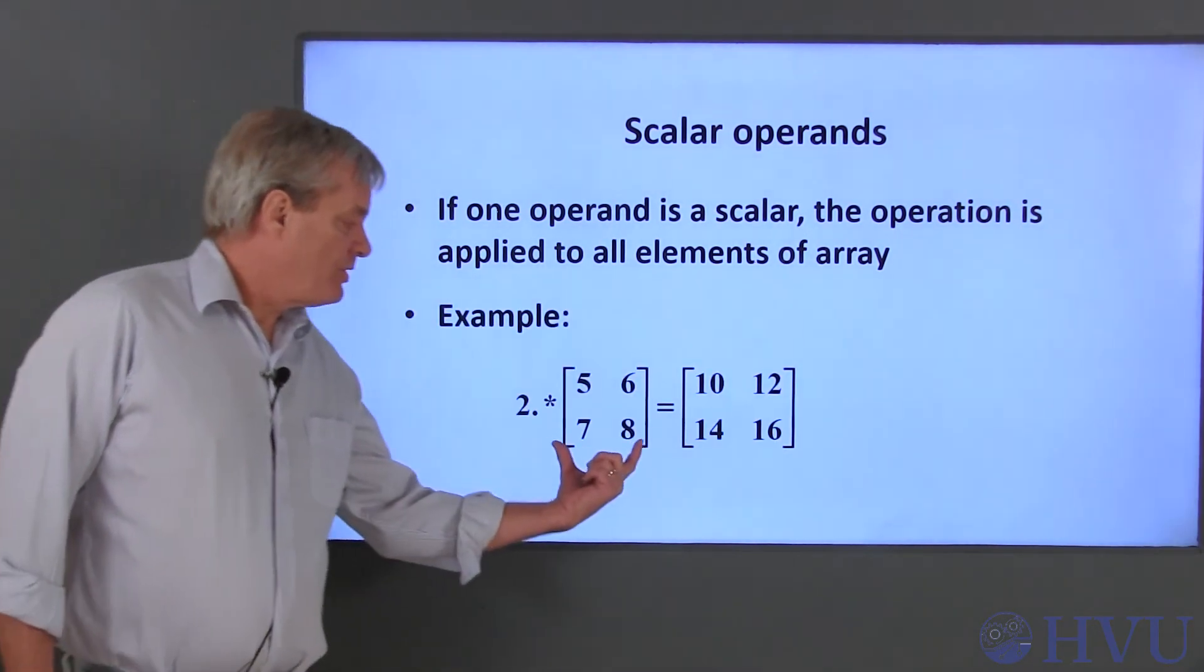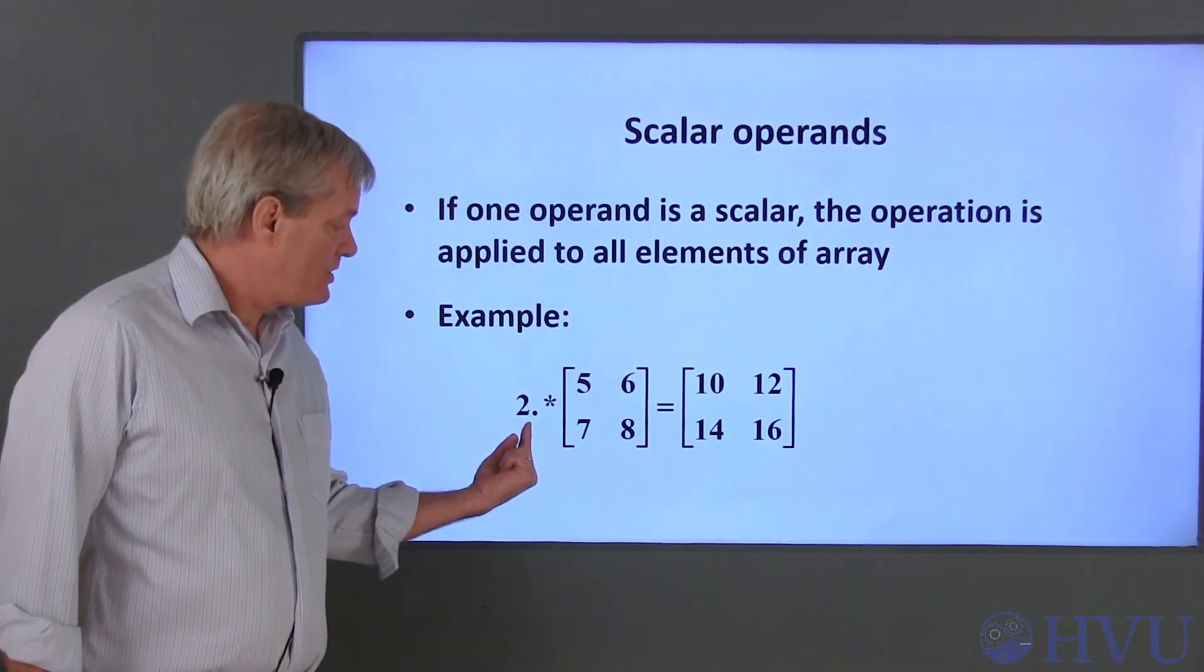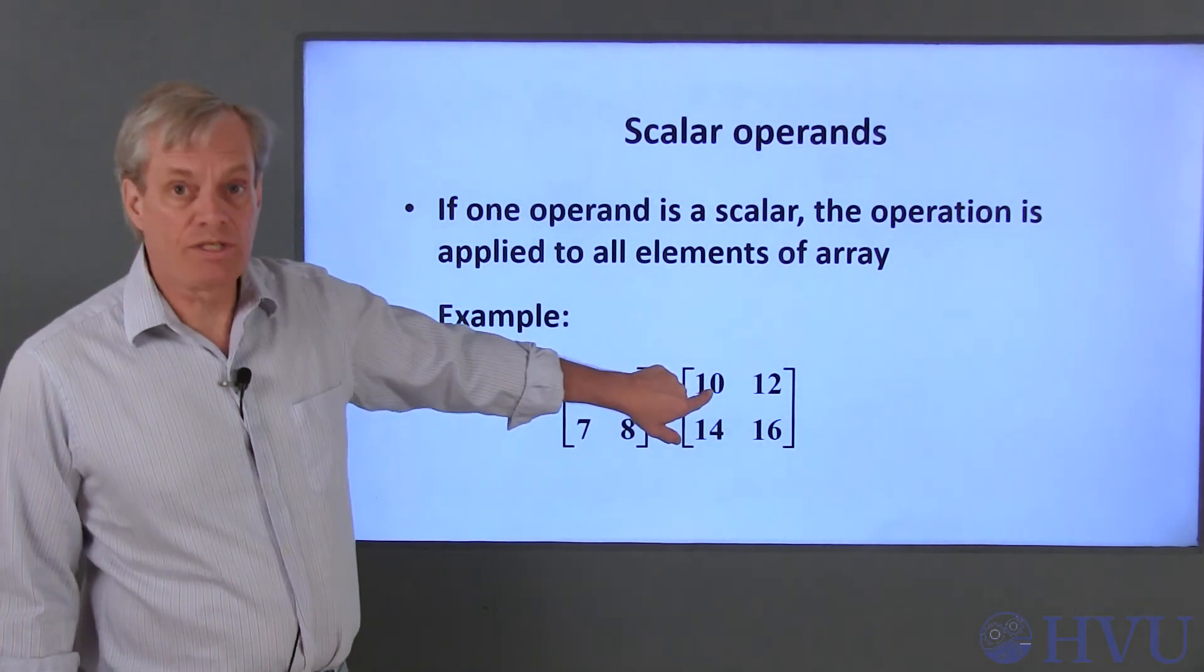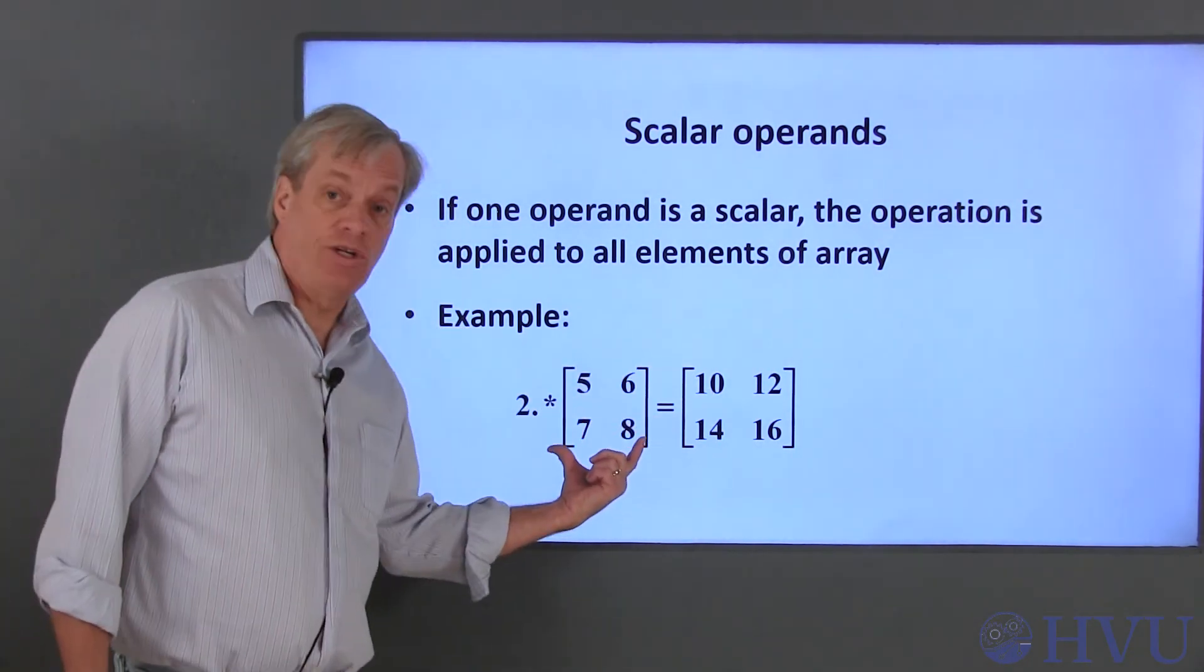For example, if I multiply this array times 2, the result is an array in which each element is 2 times the corresponding element in the original array.